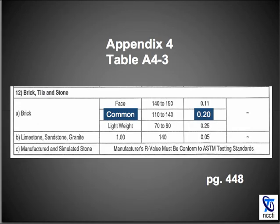Get your Manual J8 out. Turn to page 448, appendix 4, table A4-3. Under number 12 — brick, tile, and stone — A brick, the face is common, and it's R 0.2 per inch.